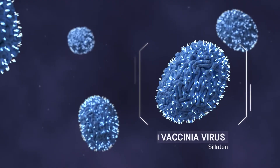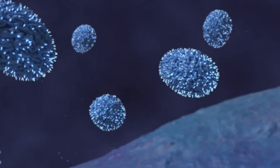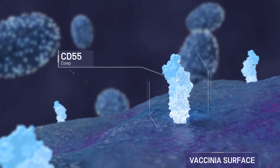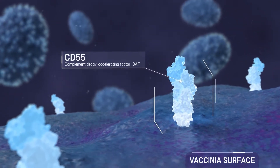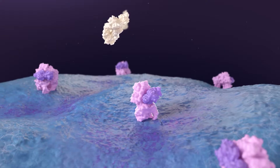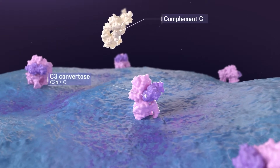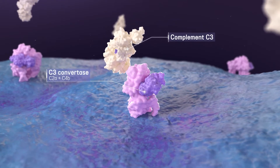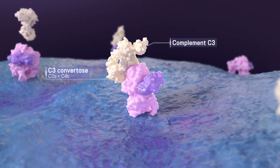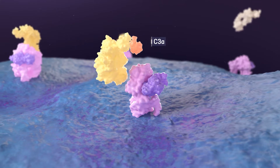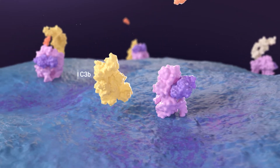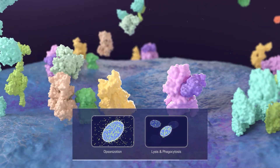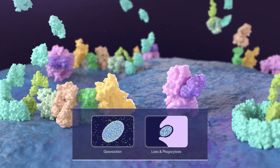To address this barrier, Silogen developed a novel platform to bypass innate immunity by expressing human CD55 on the outer lipid membrane of vaccinia virions. The first line of defense for innate immunity is the complement system. The C3-convertase cleaves C3 into C3A and C3B, and the activated C3B triggers the complement cascade and facilitates clearance of viruses through opsonization and phagocytosis.